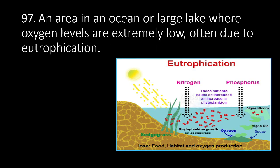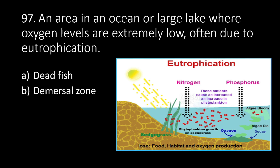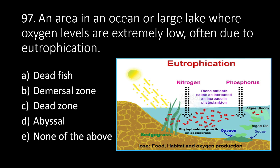Number 97: an area in an ocean or large lake where oxygen levels are extremely low, often due to eutrophication. A. Dead fizz, B. Demersal zone, C. Dead zone, D. Abyssal, E. None of the above. The answer is C. Dead zone. A dead zone is an area in an ocean or large lake where oxygen levels are extremely low, often due to eutrophication.